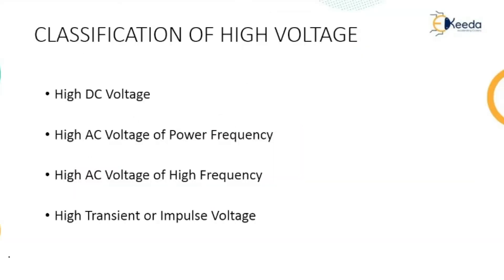High voltage is basically classified into four simple categories: high DC voltage, which generates the output as DC high voltage; high AC voltage of power frequency, that is 50 hertz as per Indian standards; high AC voltage of high frequency, where the frequency can be generated as per requirement; and lastly, high transient or impulse voltage.